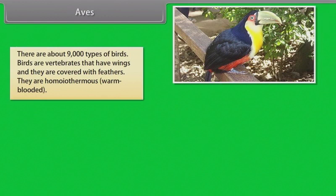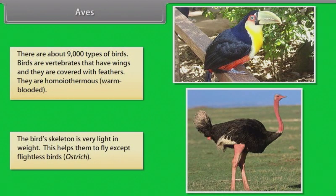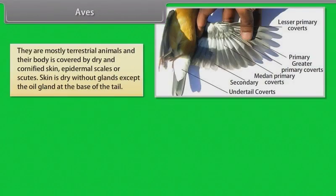Aves. There are about 9,000 types of birds. Birds are vertebrates that have wings and are covered with feathers. They are homeothermous or warm-blooded. The bird's skeleton is very light in weight, which helps them to fly, except flightless birds such as Ostrich. Their body is covered by dry and cornified skin. Epidermal scales or scutes are present.